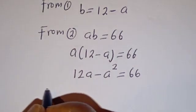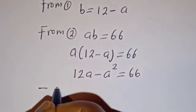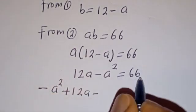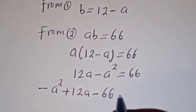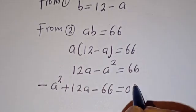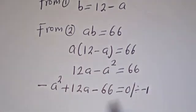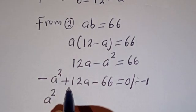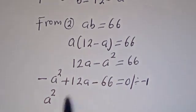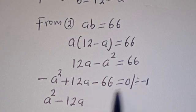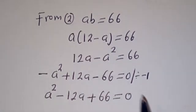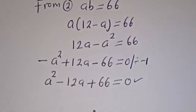Let's rearrange this. We have minus A squared plus 12A minus 66 is equal to 0. We can divide all terms by minus 1. Then minus A squared divided by minus 1 gives A squared; plus 12A divided by minus 1 gives minus 12A; minus 66 divided by minus 1 gives plus 66, equal to 0. This is a quadratic equation which can be solved using the quadratic general formula.